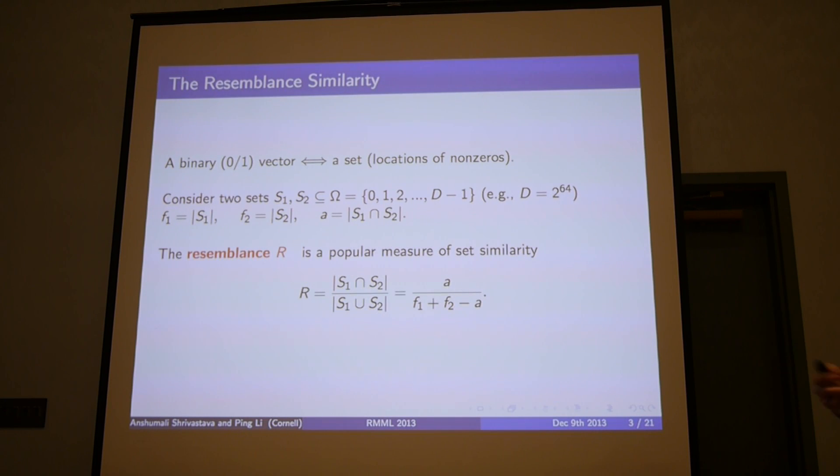Usually people consider the binary approximations of the vector in most of the big data systems, including Spark. A popular measure of similarity between these documents or representations is resemblance. A set can also be equivalently thought of as a binary vector. For example, I can put one at all the locations which are contained in the set and I get a binary representation. The similarity measure resemblance is just the ratio of the intersection of two sets divided by the union.